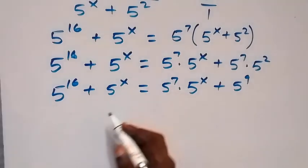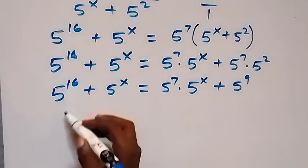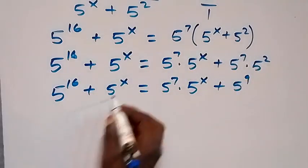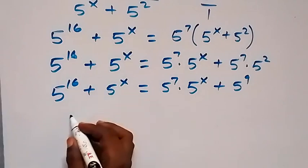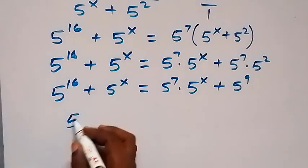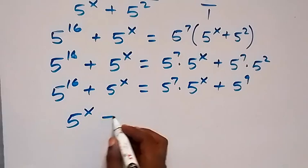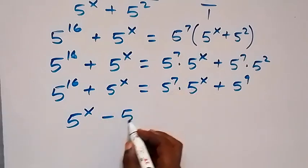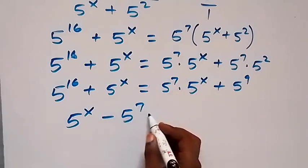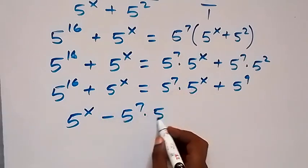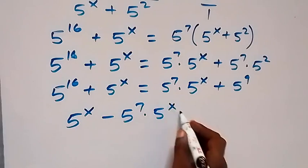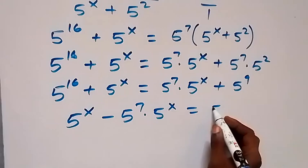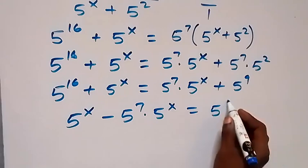Taking the terms with x to one side and the constant terms to the other side: 5 raised to power x minus 5 raised to power 7 times 5 raised to power x equals 5 raised to power 9 minus 5 raised to power 16.